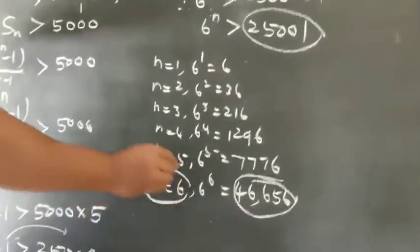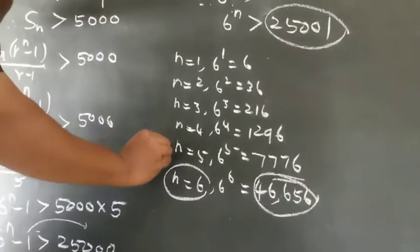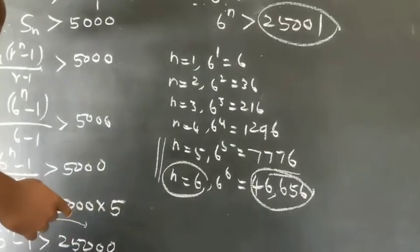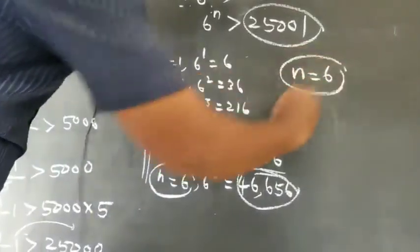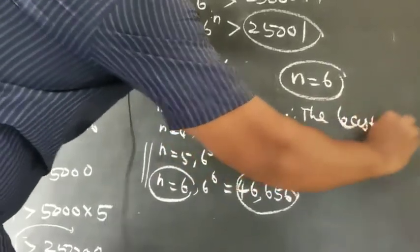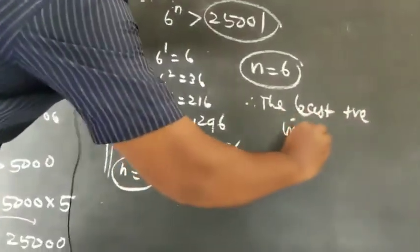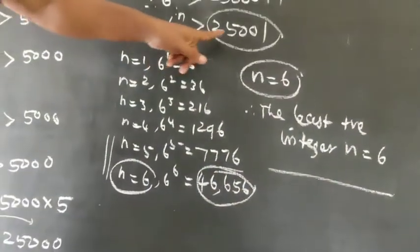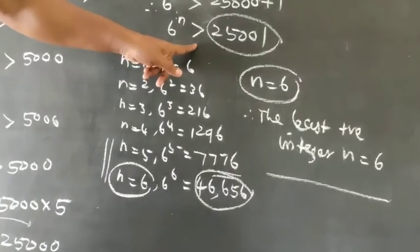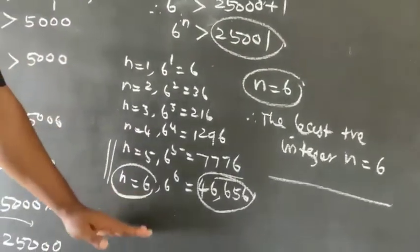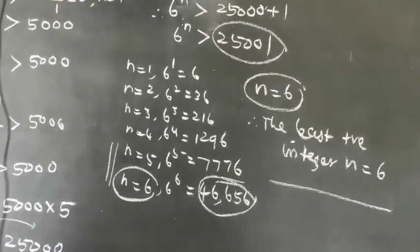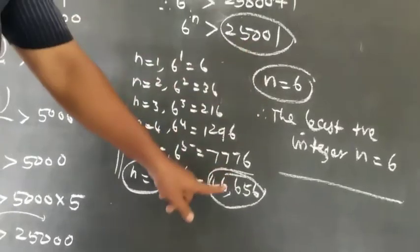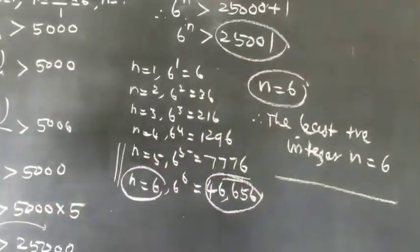6 to the power 6 is greater than 25,000. Since we need the least integer n where 6 to the power n is greater than 25,001, and 6 to the power 6 equals 46,656 which is greater than 25,001, the answer is n equals 6. The least positive integer is 6. Okay student, thank you.